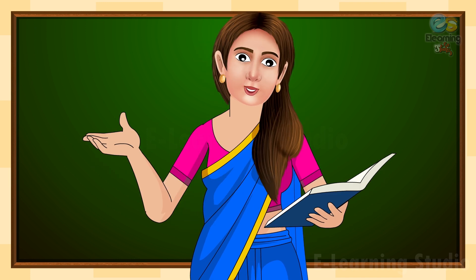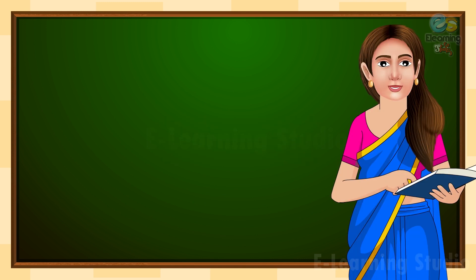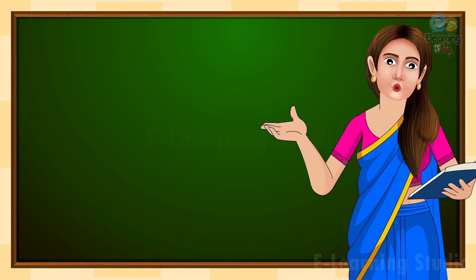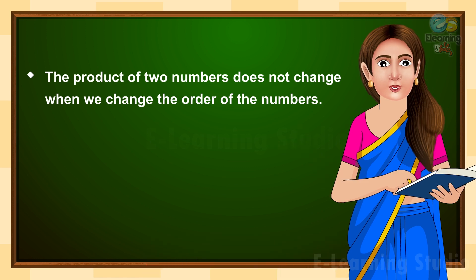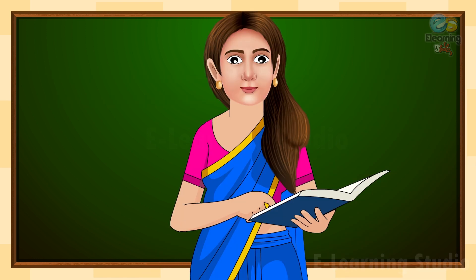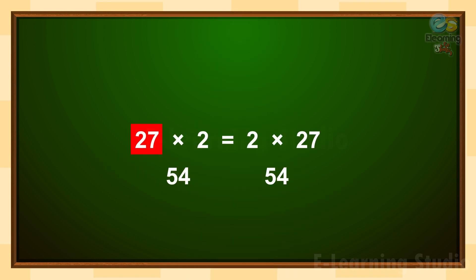The first property is order property. It tells us that the product of two numbers does not change when we change the order of the numbers. Let us understand order property with the help of some examples. When we multiply 2 by 7, we get 54. But when we change the order of numbers, 2 multiply 27, both give us 54 as a result.